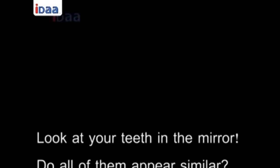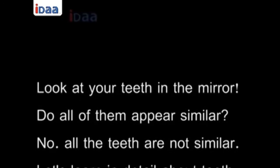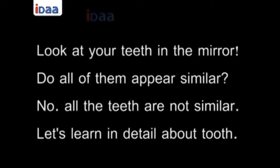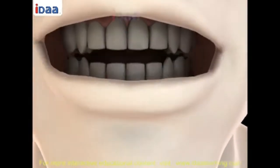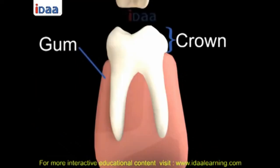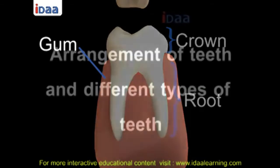Look at your teeth in the mirror — do all of them appear similar? No, all the teeth are not similar. Let's learn in detail about tooth structure. Every tooth is embedded in a socket called the gum. The crown is the visible part of the tooth above the gum, and the root is the part of the tooth under the gums.